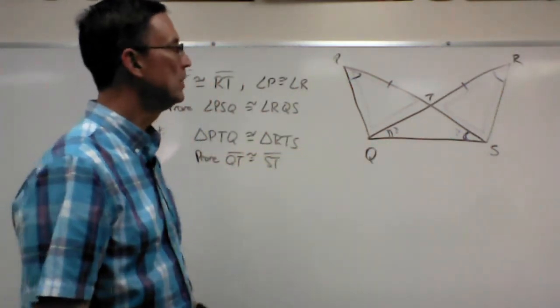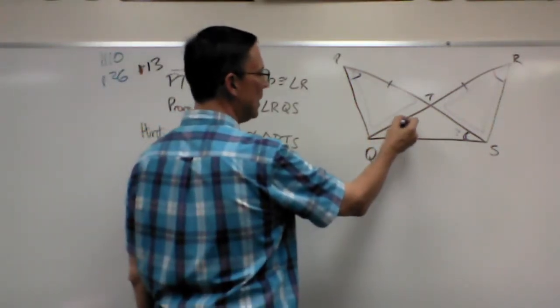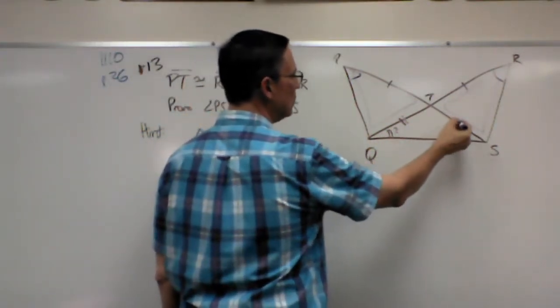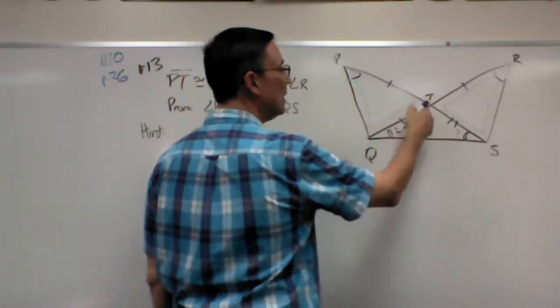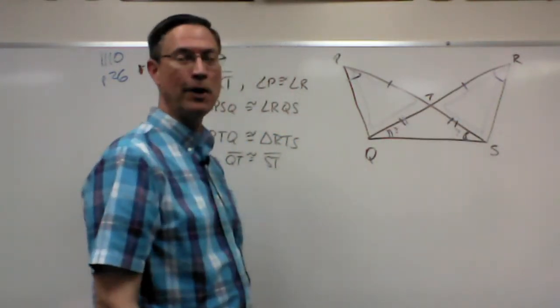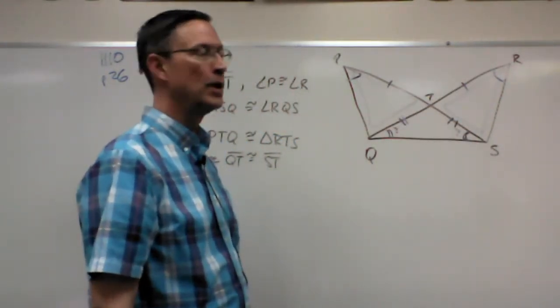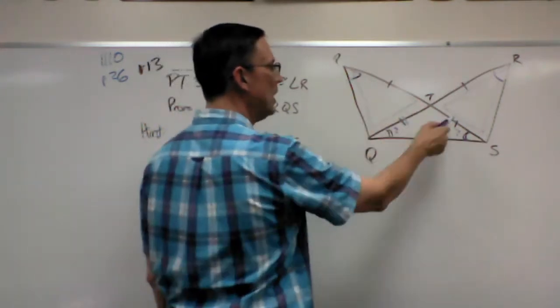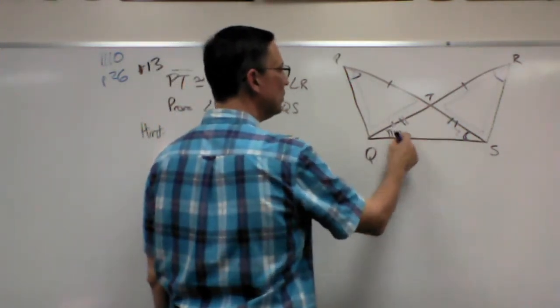Once they're congruent, now we can say, look at this, this side is congruent to this side. Corresponding parts, remember, of congruent triangles are congruent. So if the triangles are congruent, then these two sides are congruent.